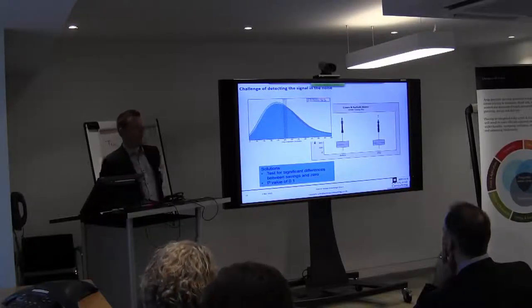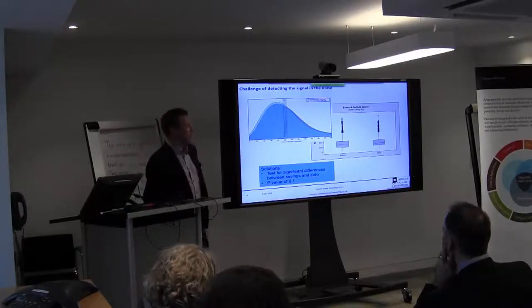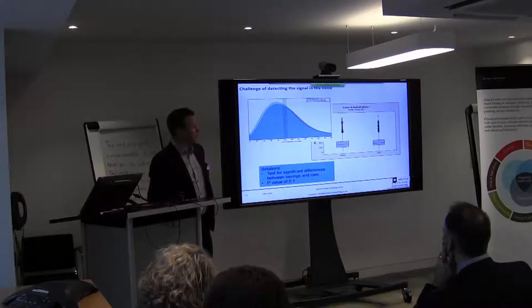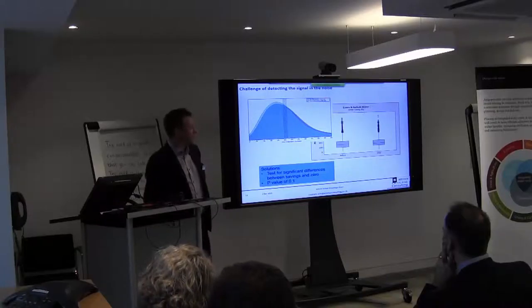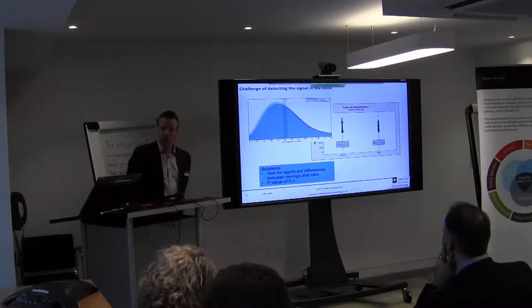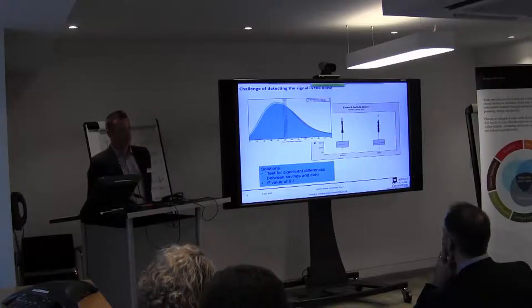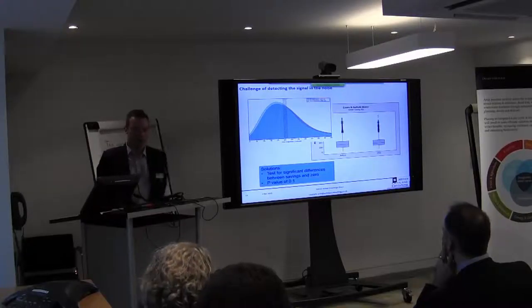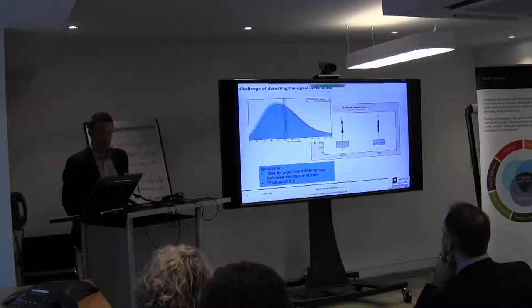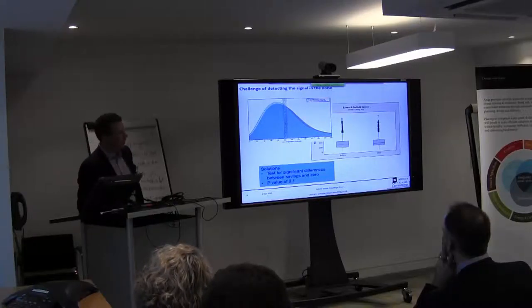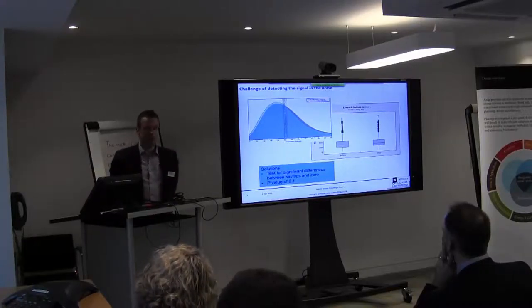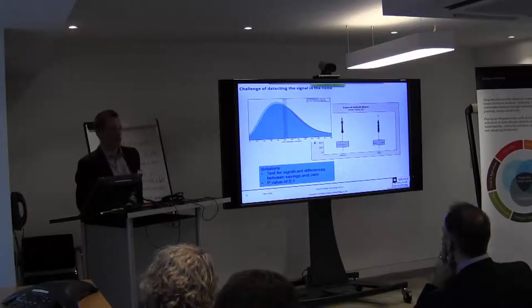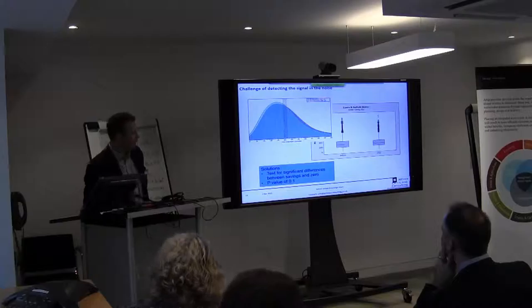We calculated the saving by subtracting the after consumption from the before consumption, and then we compared that saving against zero, rather than comparing the difference between two large and only slightly different numbers. Secondly, we set a p-value threshold at which we decided whether there was a significant saving or not, at 0.1.